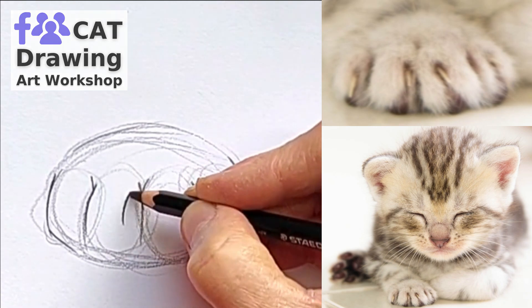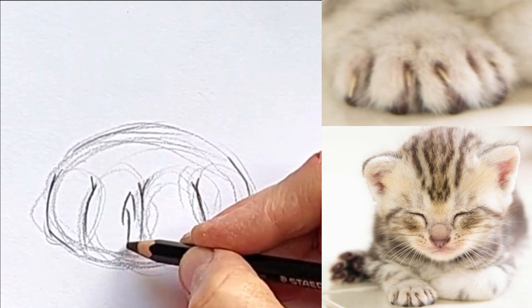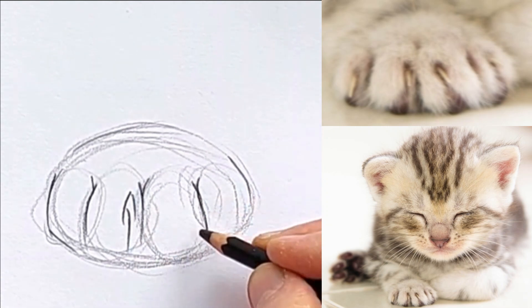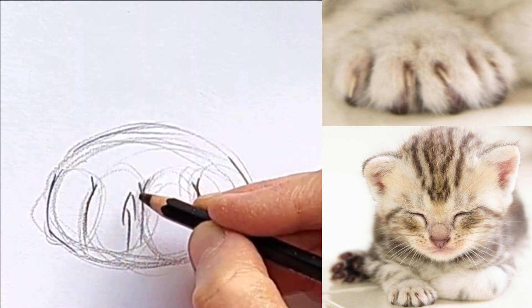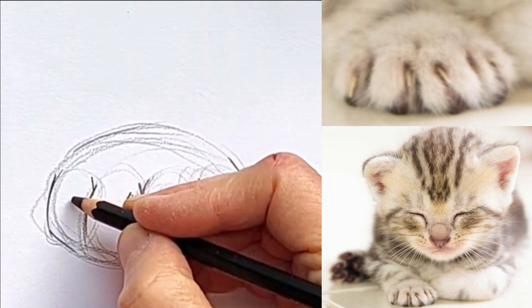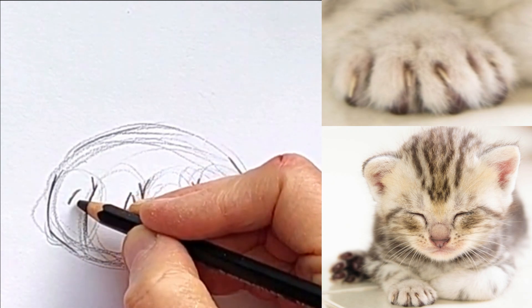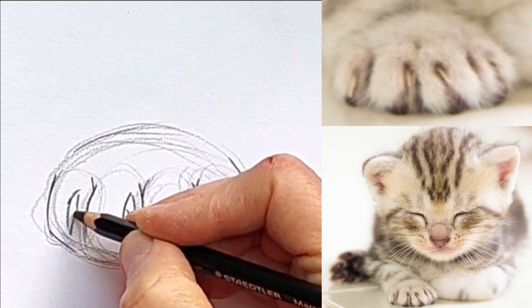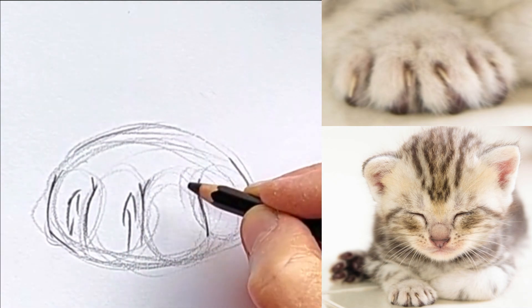And the claws. The claws aren't necessarily right in the middle of the toe depending on how the cat's positioned. And you kind of want to add some interest, some variation. I go partly by the photo and partly by what the drawing needs.